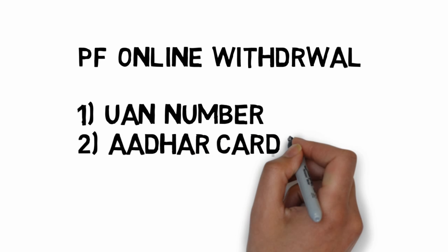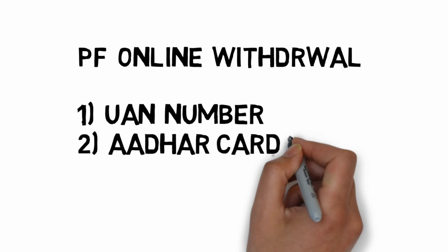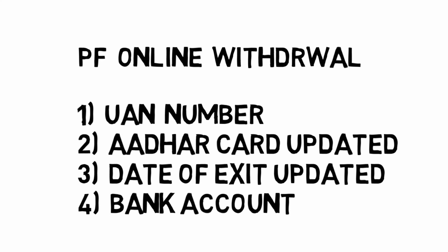First, you can get a UAN number. Then you can update the UAN portal. You can update the UAN data of exit and you can update the UAN portal. You can link the UAN portal. Now you can see the four details and you can update the UAN portal.